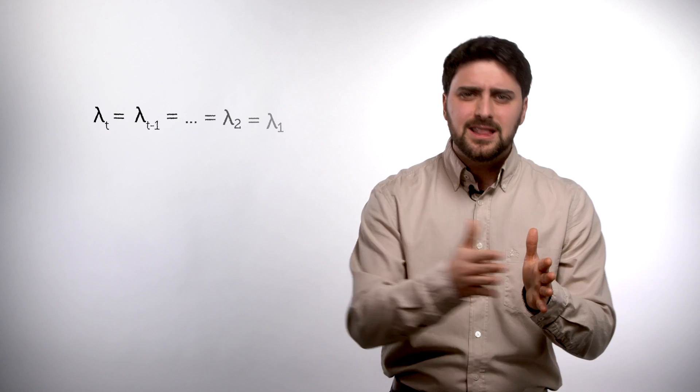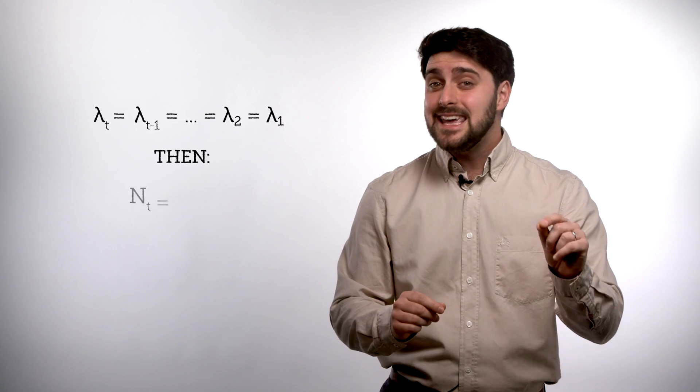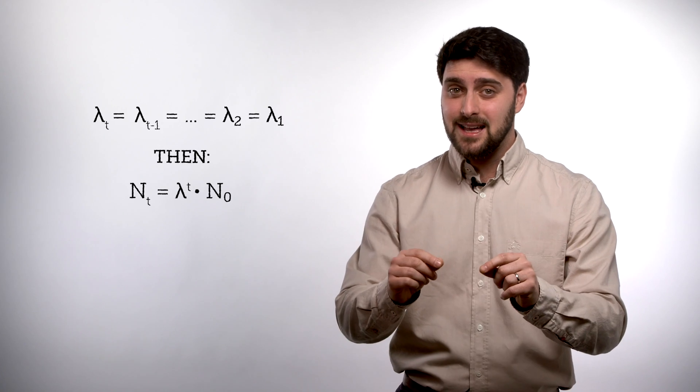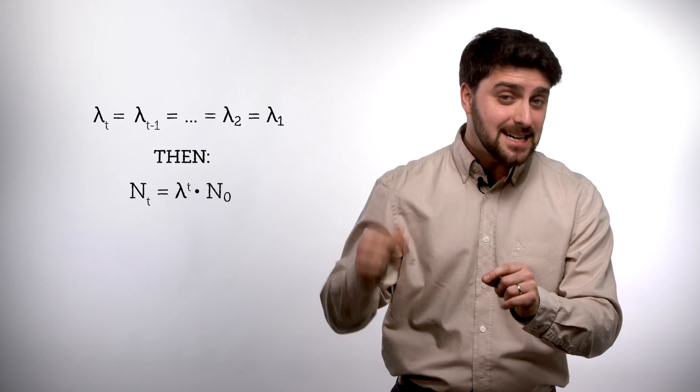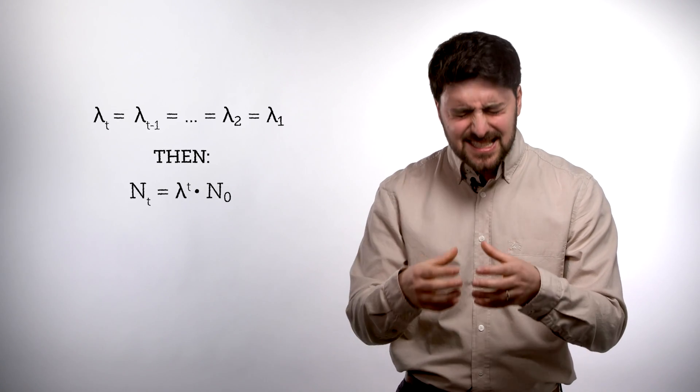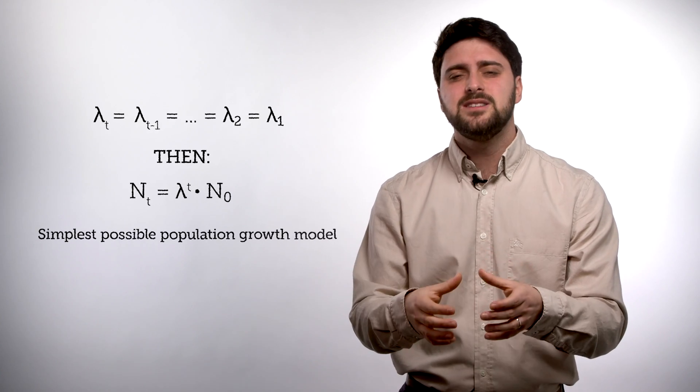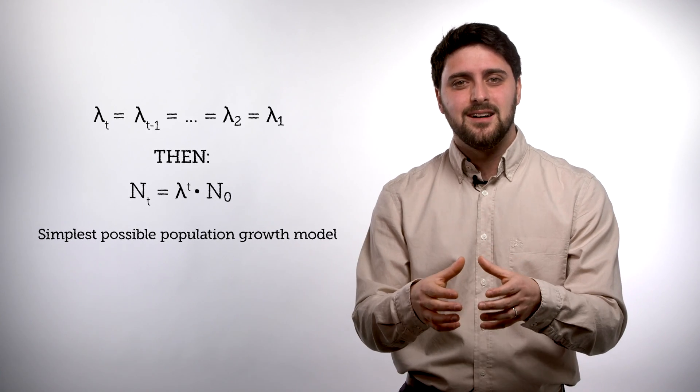And then let's wrap this up by making a simple assumption, which is all these growth or decreases, all these rates of growth across all these time intervals are equal to one another for this population. So that all the lambdas equal one another. What we end up with is Nt equals lambda to the power of t times N0. And that's the simplest possible model of population growth.